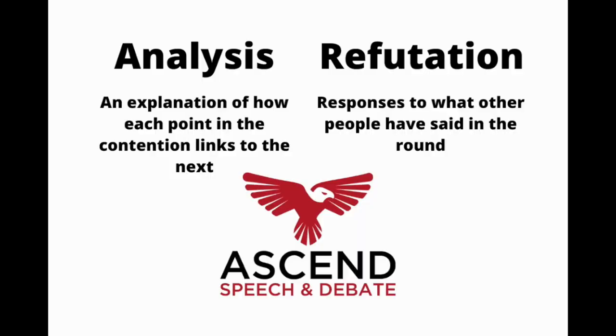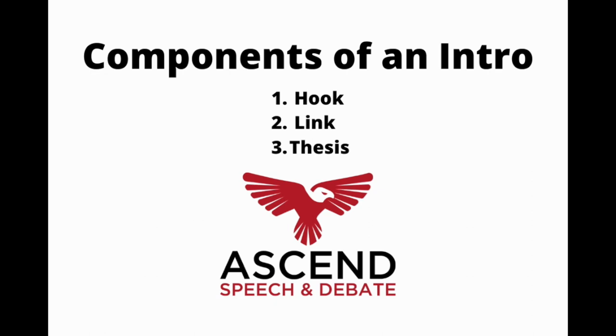Claim, warrant, data, impact — these four things have to be in every speech, but they aren't the only things. Between the warrant, each card, and the impact, you need to make space for analysis or refutation. Analysis is your explanation of how each point in the contention interlinks; refutation is just responding to what other people in the round are saying. Analysis has to be in every point, and refutation has to be in every speech except the authorship. Each contention should round out to about a minute and 10 seconds.